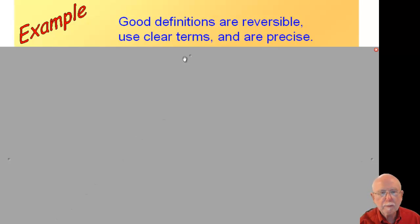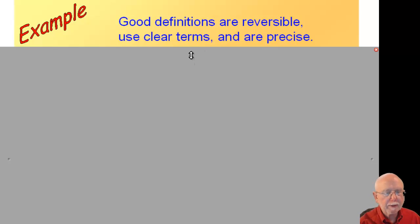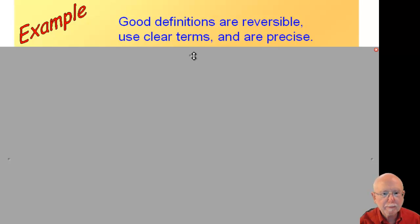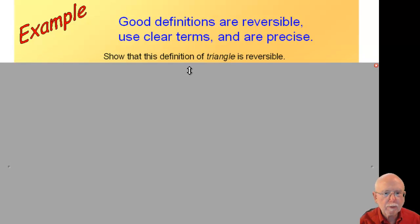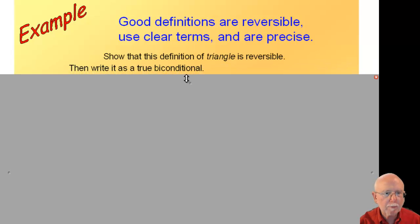Good definitions are reversible, use clear terms, and are precise. When I say reversible, it means I can write it as a biconditional — meaning the original conditional and its converse are both true. I'll use clear terms, not things like 'blue' or 'pretty,' and I'll be precise — not using words like 'several' or 'large.' If it needs a numeric value, I'll use something like three or four, depending on what applies.